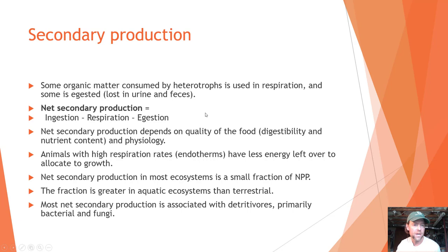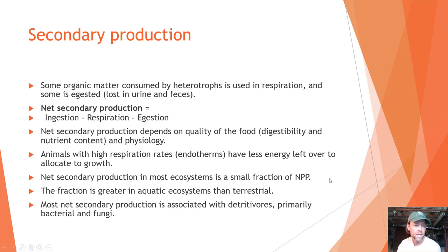Some organic matter consumed by heterotrophs is used in respiration and some is lost through digestion. Net secondary production equals ingestion minus respiration minus excretion — essentially intake minus output. Net secondary production depends on food quality, digestibility, nutrient content, and animal physiology. Animals with high respiration rates, such as endotherms, have less energy left over for growth. In most ecosystems, net secondary production is a small fraction of NPP, though the fraction is slightly higher in aquatic systems. Most net secondary production is associated with detritivores — primarily bacteria and fungi — which access the large amount of energy tied up in detritus.